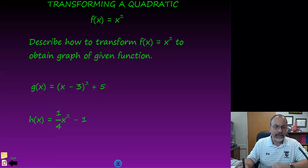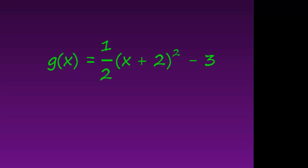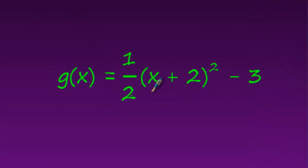Let's take a look at one more example here. So I have this example, g of x is equal to 1 half of quantity x plus 2 squared minus 3. So again, let's take a look at each one of these transformations separately.